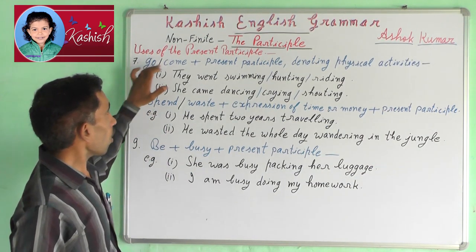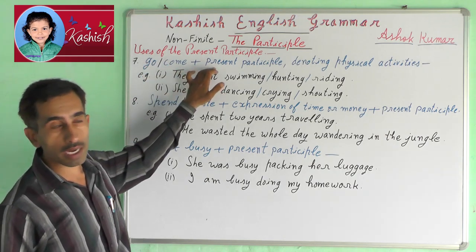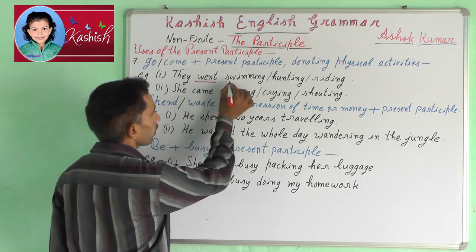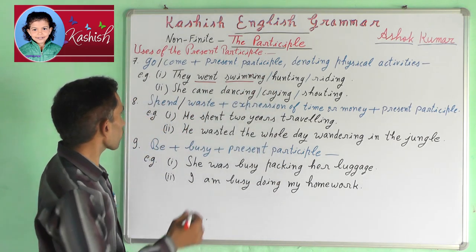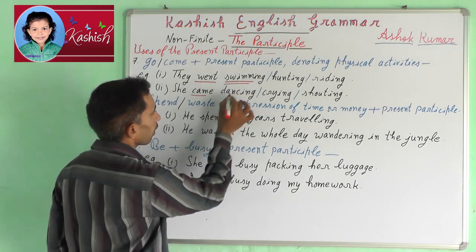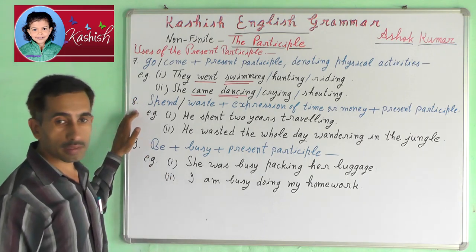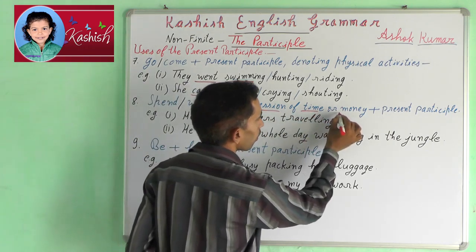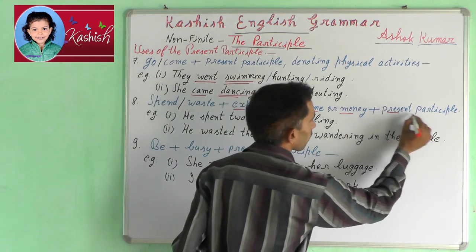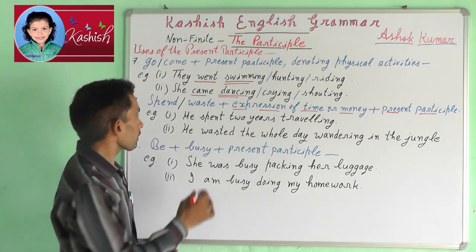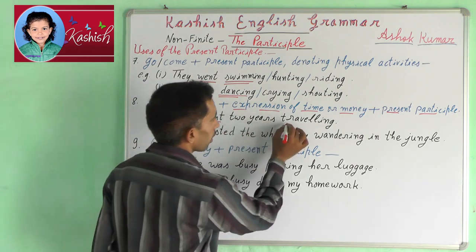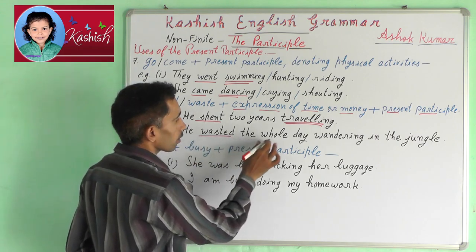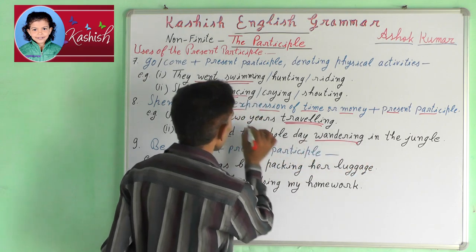Seventh, go or come + present participle denoting physical activities — for example: 'They went swimming.' Next: 'She came dancing.' Eighth, spend or waste + expression of time or money + present participle — for example: 'He spent two years travelling.' Next: 'He wasted the whole day wandering in the jungle.'